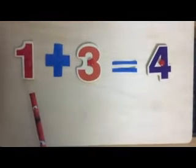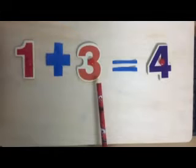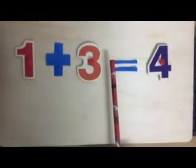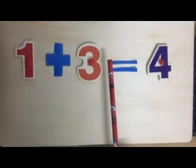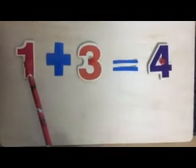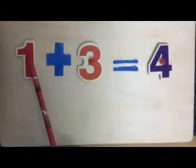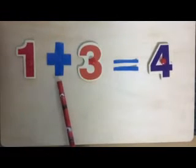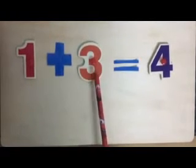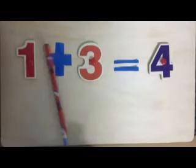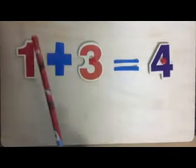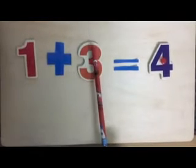Now let's see an example. Here we have the number one and the number three kept in order. As you know, one, in between there is a two, and then comes three. So this is kept in this order like one and three.